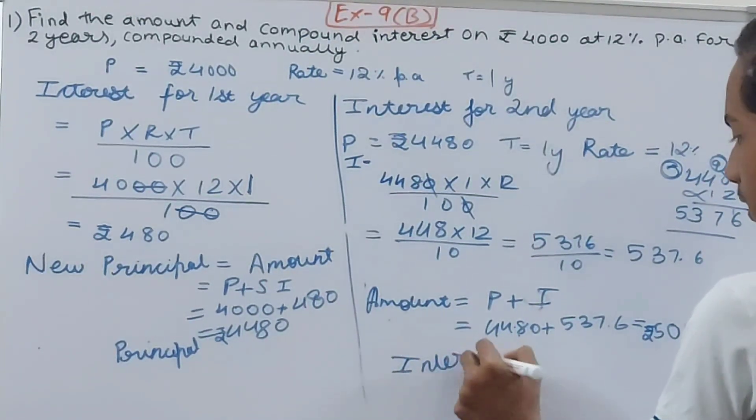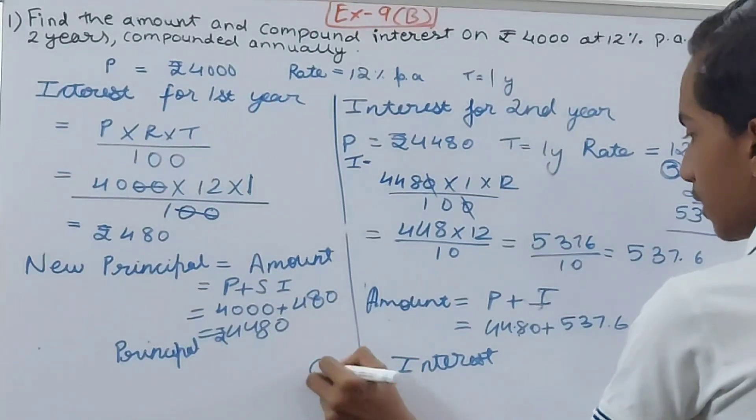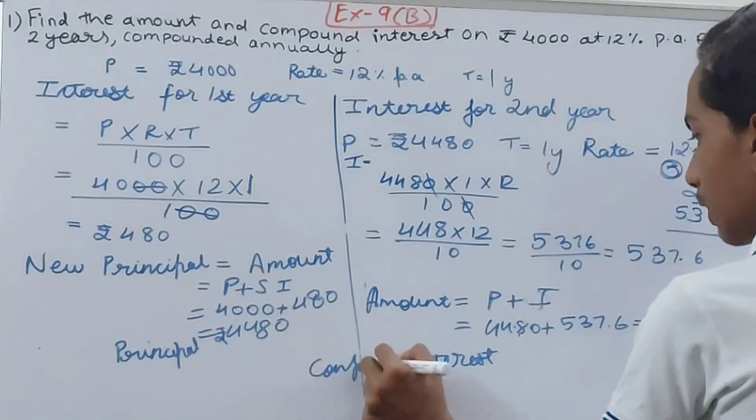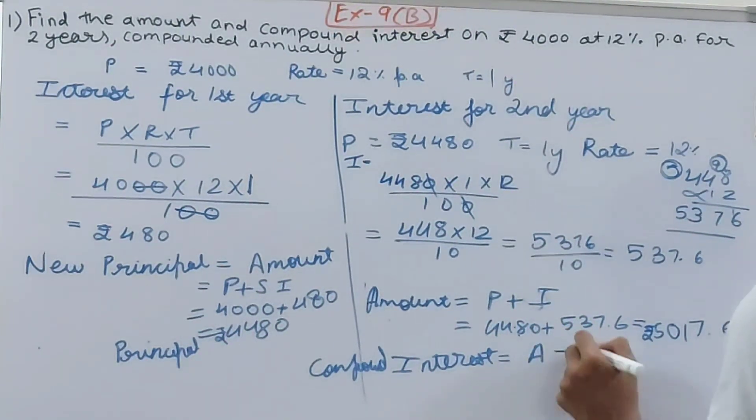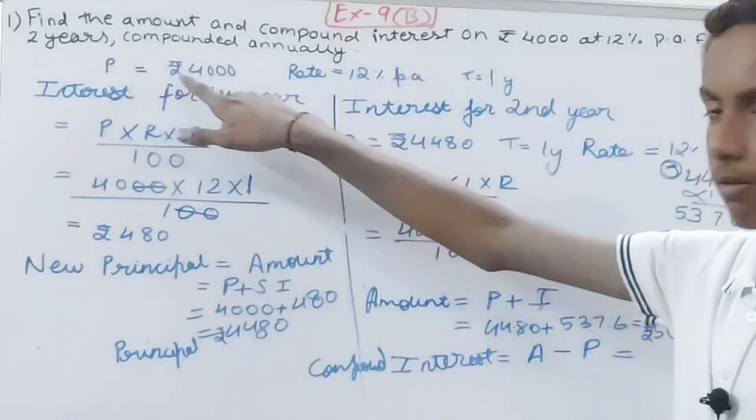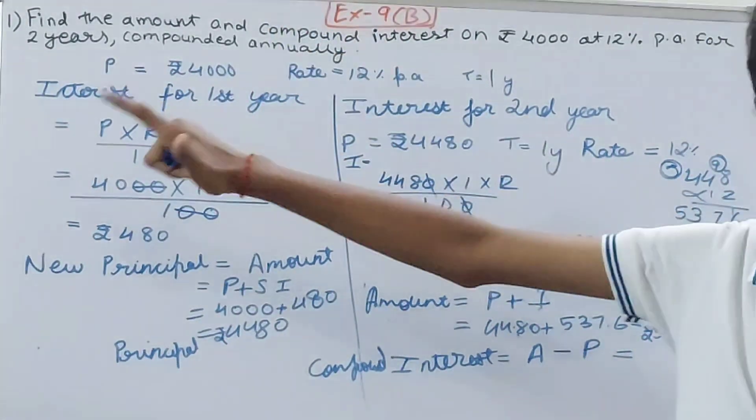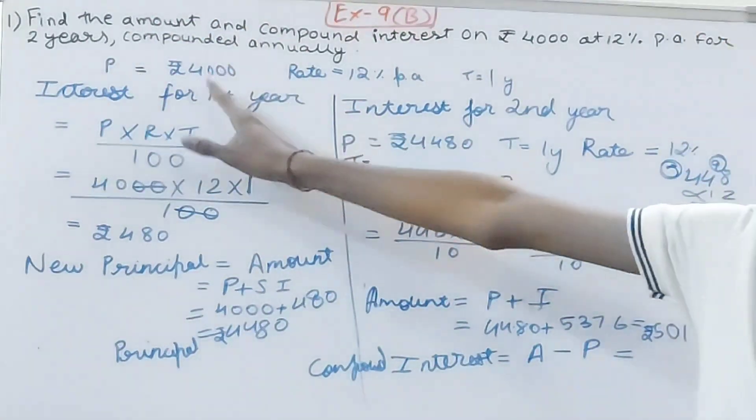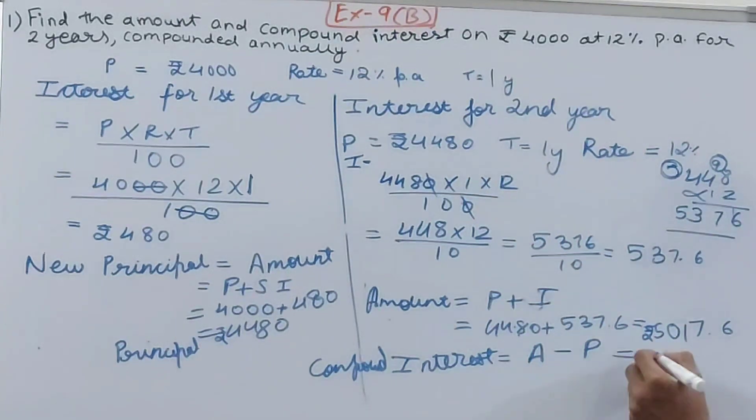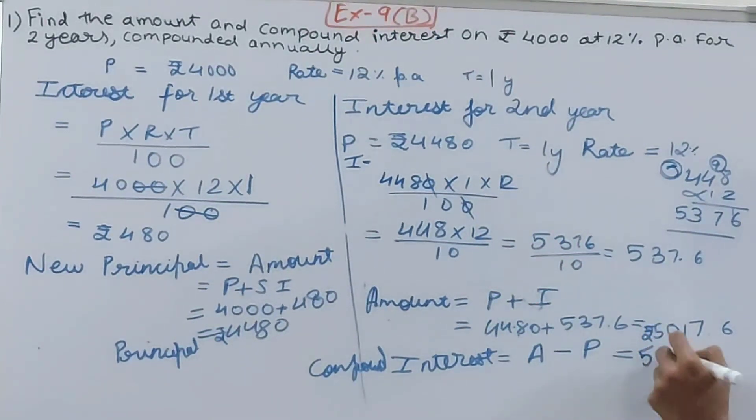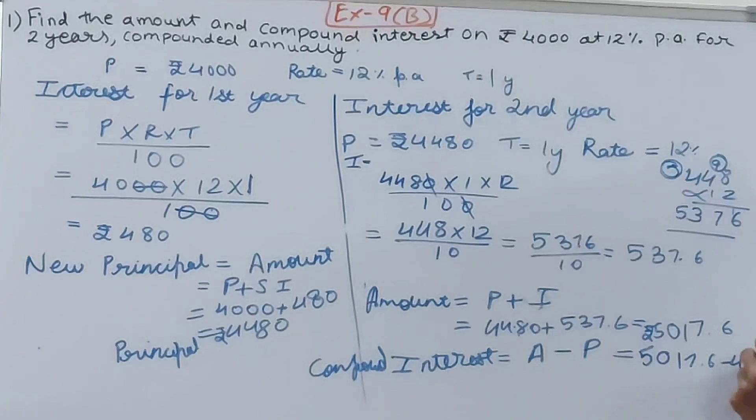And the compound interest—compound interest is the amount minus the principle. Here the principle that we will take will be what we have taken in the beginning of the question—that is 4000. Now don't make this mistake that you take 4480. So 5017.6 minus 4000—this will be 1017.6 rupees. That is our answer.